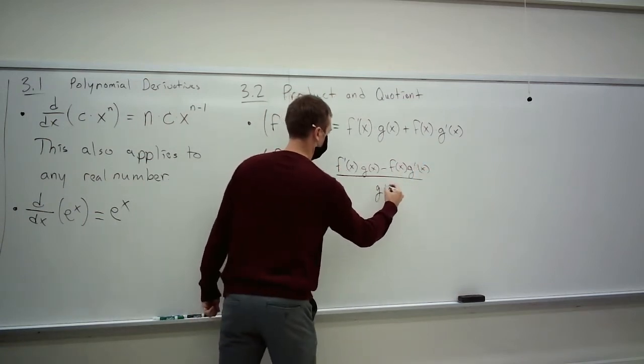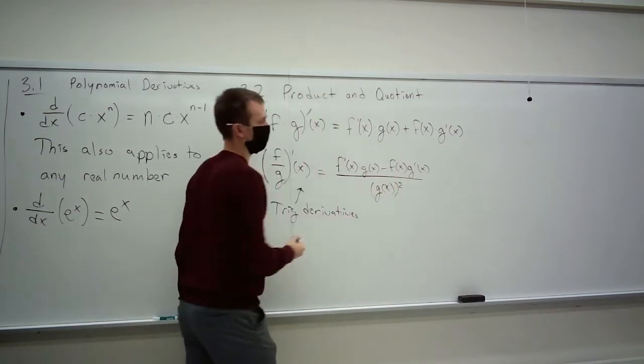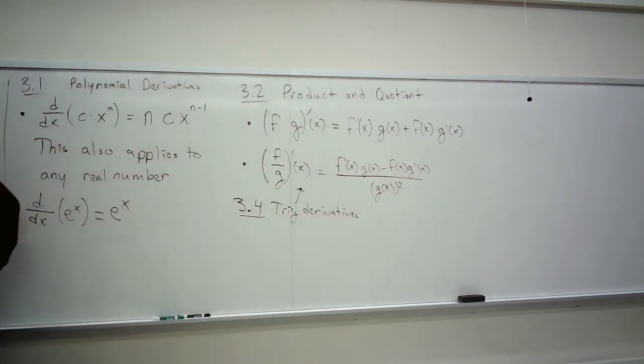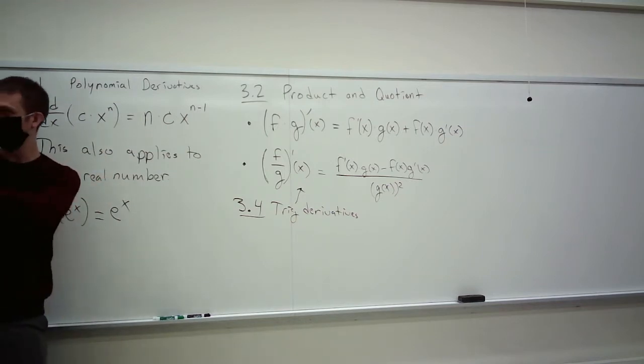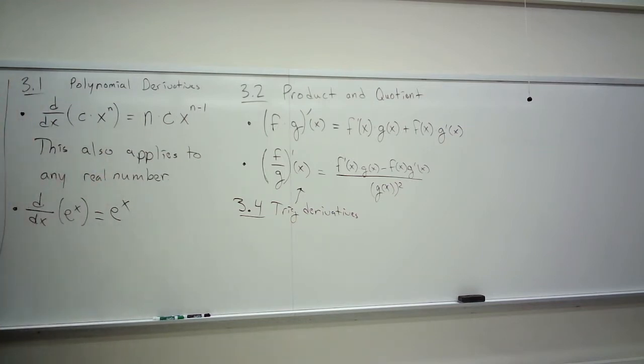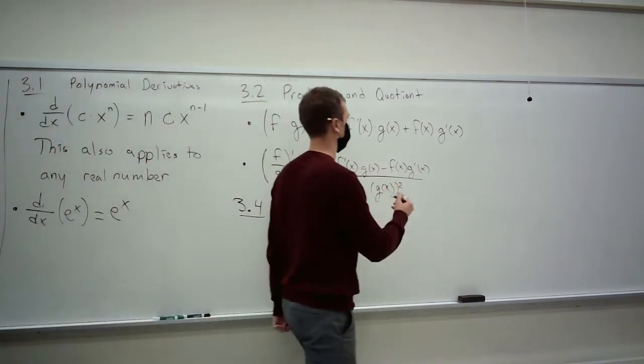And then sine and cosine are kind of the standard two that we looked at. And then tangent is sine over cosine. Cotangent is cosine over sine. Secant is 1 over cosine. Cosecant is 1 over sine, etc. So this rule is a very important one for trig and just in general. And does anyone remember it? Somebody's been working on their math. I think it's official. Well, you've crossed the line into nerddom. Well done. Thank you for joining me.